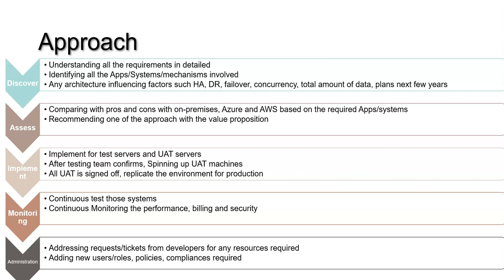Then explain how you assessed by comparing the pros and cons of on-premises, Azure, AWS, and GCP — which one you preferred — and how you assessed between PaaS and IaaS for that particular requirement. Then recommend one approach with a value proposition: where you are saving money, why you are going with that approach. All those things are presented to convince the customer before moving into implementation.